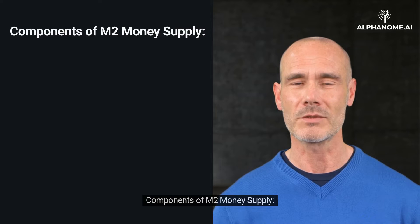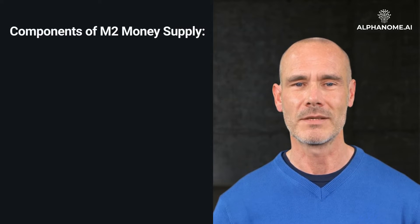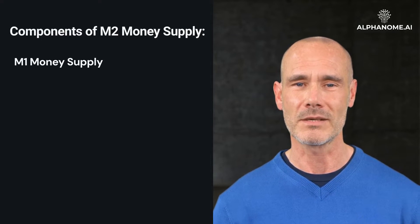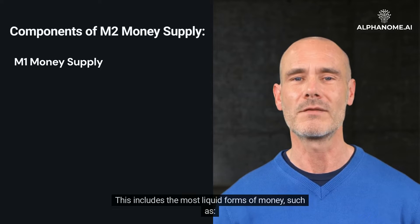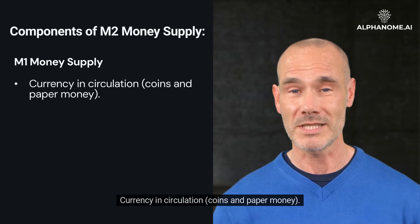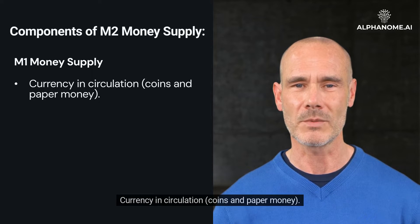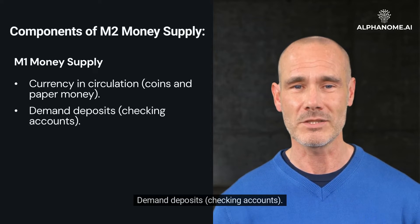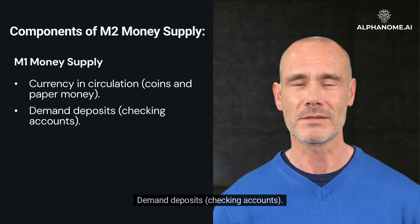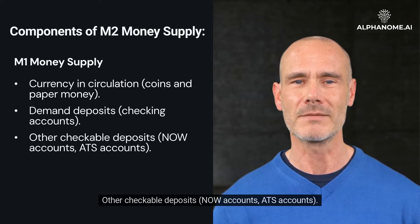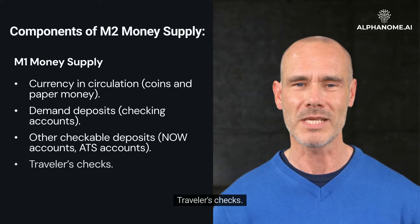Components of M2 money supply. M1 money supply includes the most liquid forms of money, such as currency in circulation (coins and paper money), demand deposits (checking accounts), other checkable deposits (NOW accounts, ATS accounts), and travelers checks.